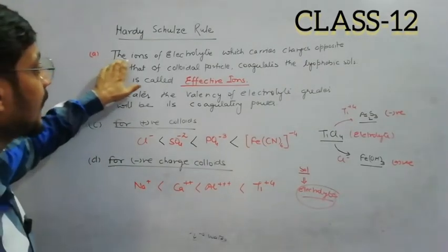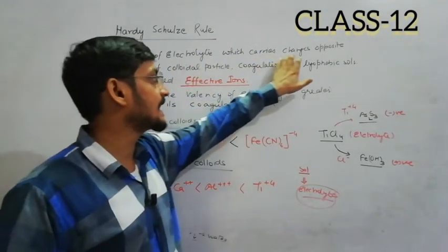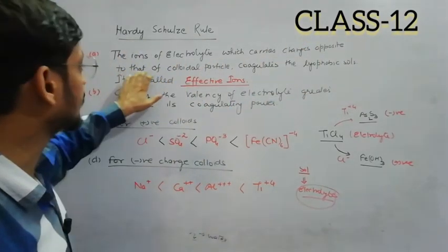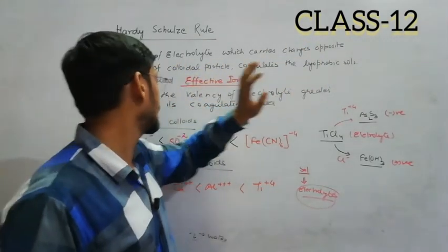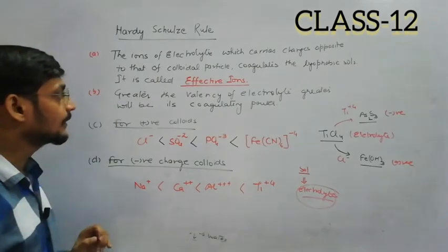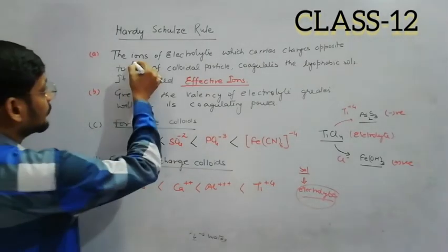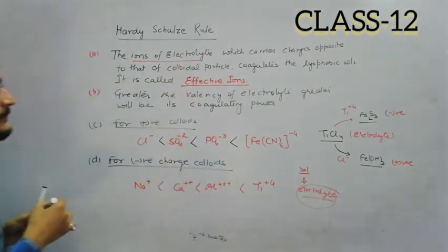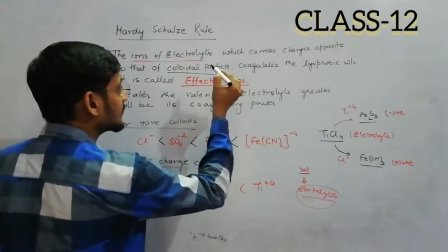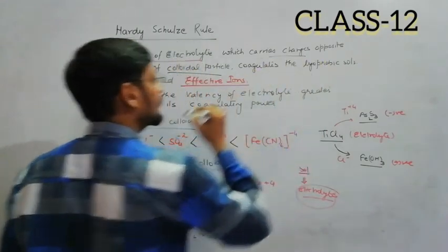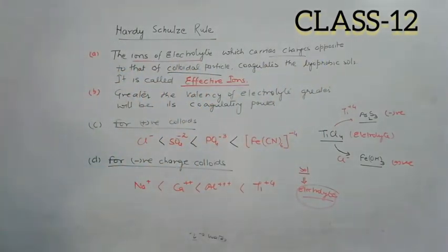Let's see the first point: The ions of electrolyte which carry charges opposite to that of colloidal particles coagulate the lyophobic sol. It is called effective ions. So the ions of electrolyte that carry opposite charge to the colloidal particles are responsible for coagulation of lyophobic sol.